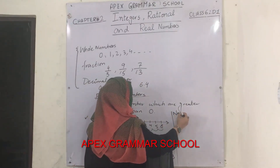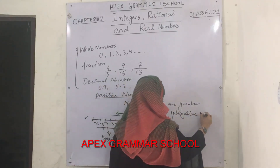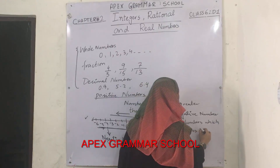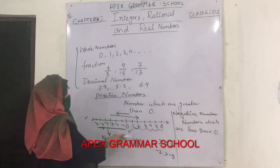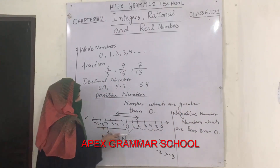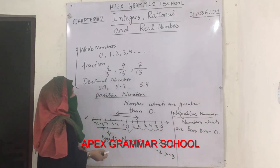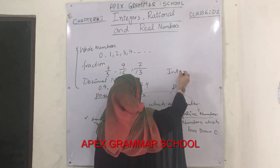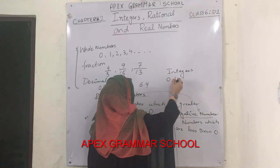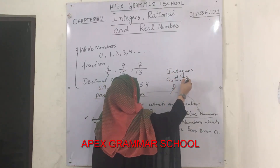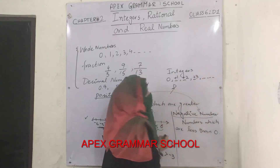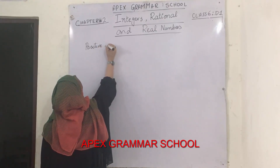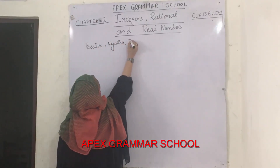So we come to the definition of negative numbers: numbers which are less than 0. Numbers which are greater than 0 are called positive numbers, and the numbers which are less than 0 are called negative numbers. When you combine positive numbers and negative numbers together with 0, these are called integers. Integers consist of 0, plus 1 and minus 1, plus 2 and minus 2, plus 3 and minus 3, and so on. So we have learnt about positive numbers, negative numbers and integers.